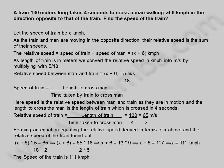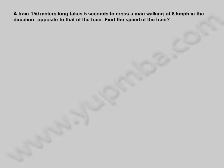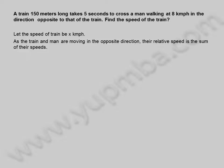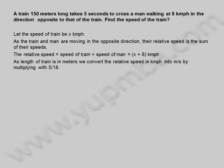Let us see another example. A train 150 meters long takes 5 seconds to cross a man walking at 8 kilometers per hour in the direction opposite to that of the train. Find the speed of the train. Let the speed of train be x kilometers per hour. As the train and man are moving in the opposite direction, their relative speed is the sum of their speeds, equal to x plus 8 kilometers per hour. Converting to meters per second by multiplying with 5 by 18, the relative speed is x plus 8 into 5 divided by 18 meters per second.